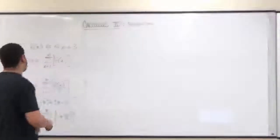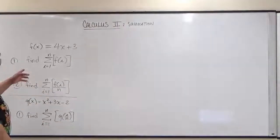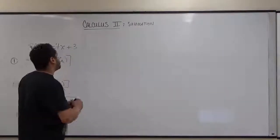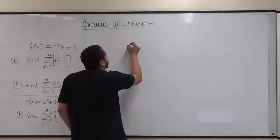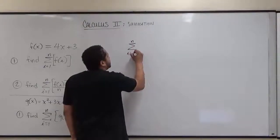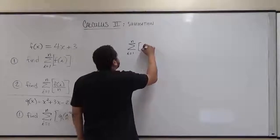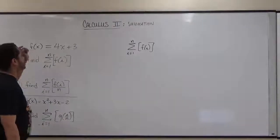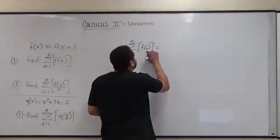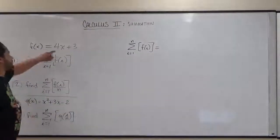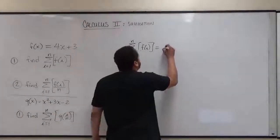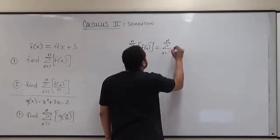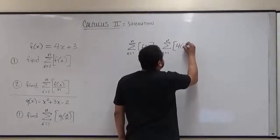For the f function in the first problem, we have the summation from 1 to n of f. What we need to do first is transform the function so that we can get the summation solution. We have the summation from i equals 1 to n, and we insert i into the f function — i takes the place of x — giving us the summation from i equals 1 to n of 4i plus 3.